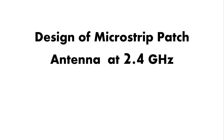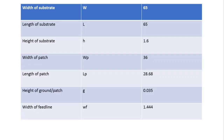Bismillahirrahmanirrahim. Assalamu alaykum, welcome to Technically Explained. In the previous video we designed a microstrip patch antenna for 5G applications. In this video we are going to design a microstrip patch antenna at 2.4 GHz, which can be used for Wi-Fi, Bluetooth, and other wireless applications.